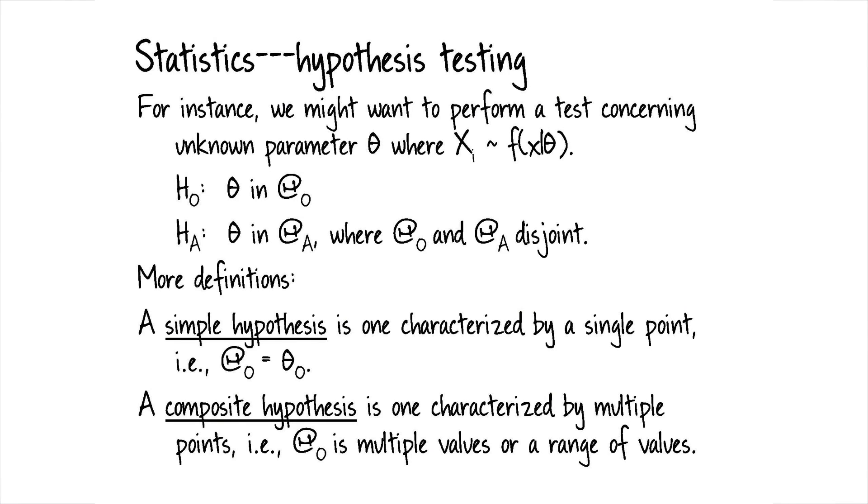Okay, so for instance, let's say we want to perform a test concerning an unknown parameter theta where x sub i, we have a random sample x sub i from this distribution characterized by theta. So we've got this random sample, theta is some parameter governing the distribution of the random sample. So our null hypothesis we might specify as theta being in some space, capital theta naught.